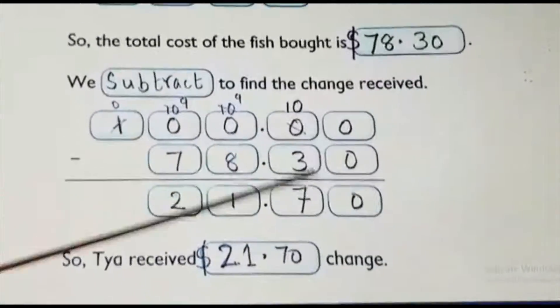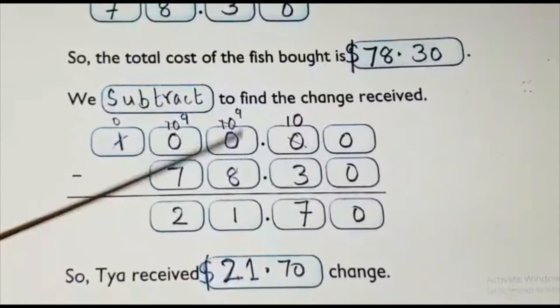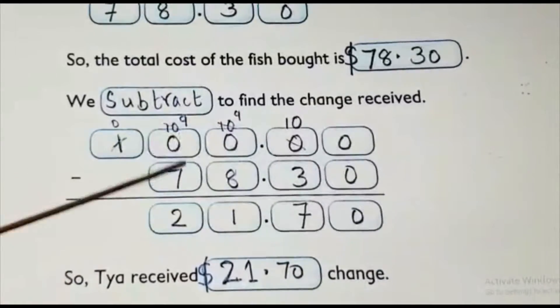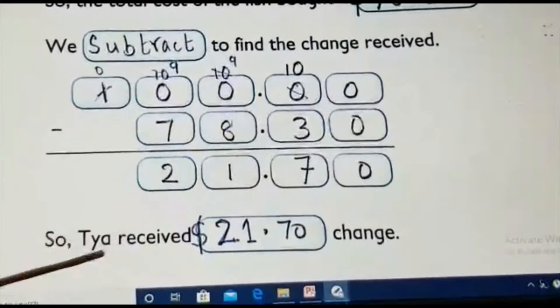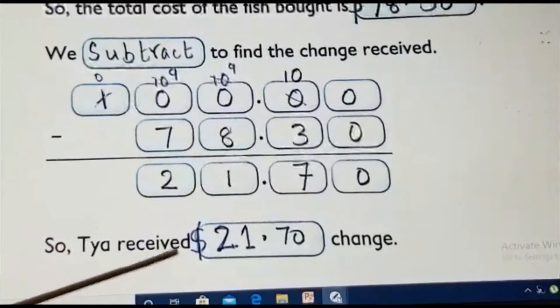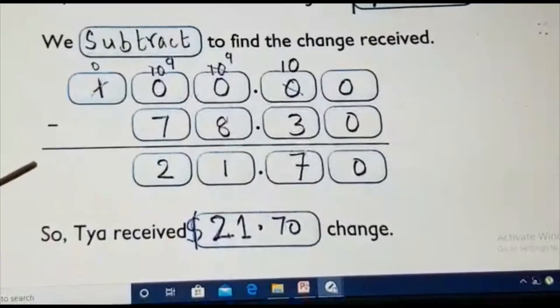What is 10 minus 3? It is 7. Here it is 9. 9 minus 8 is 1. 9 minus 7 is 2. What is the answer? 21.70. Tia received 21.70 as change.